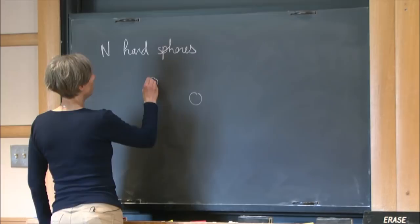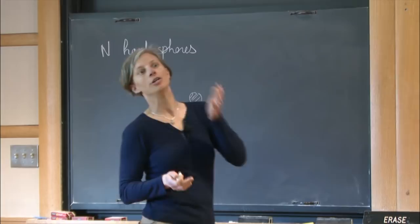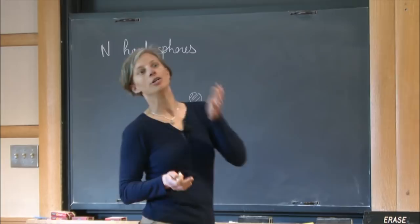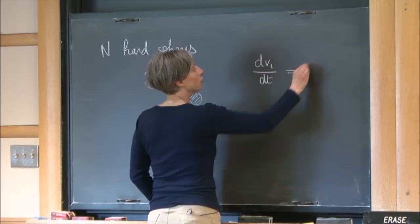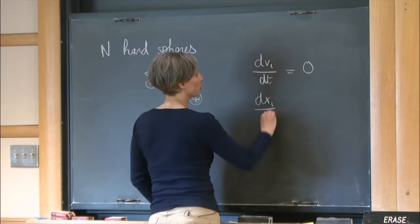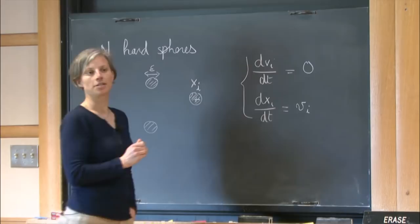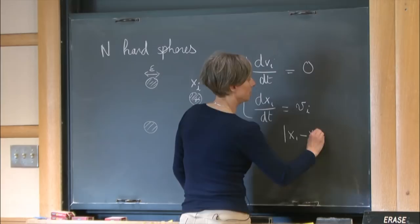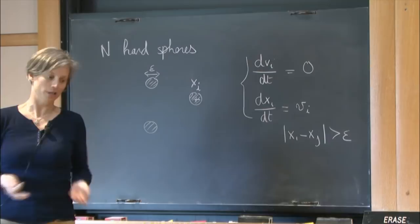The dynamics is very simple. Either a particle does not cross any other particle, in which case it has straight motion with uniform velocity: dv_i/dt = 0, and dx_i/dt = v_i. This is valid as long as |x_i - x_j| > epsilon. When particles do collide, you need a collision rule.